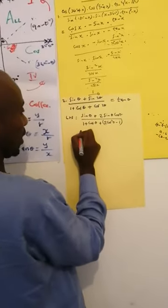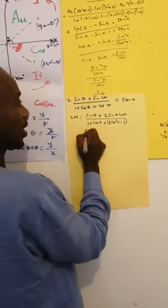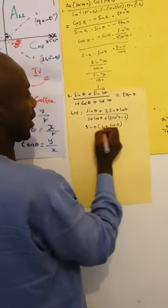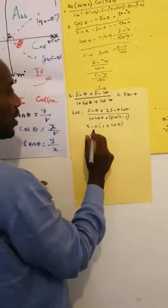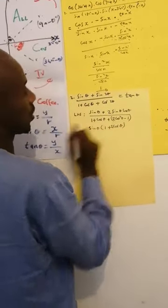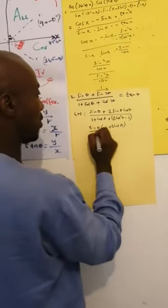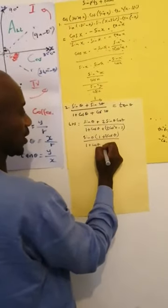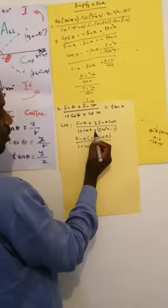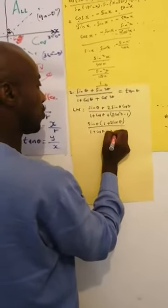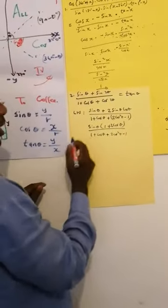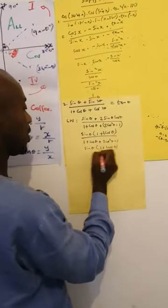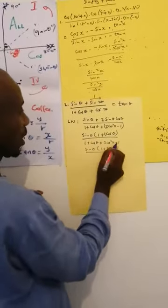So we take the common factor, which is sin θ, giving sin θ(1 + 2cos θ) in the numerator. The denominator is 1 + cos θ + 2cos²θ − 1. So 1 minus 1 is 0, and we have sin θ(1 + 2cos θ) divided by cos θ + 2cos²θ.